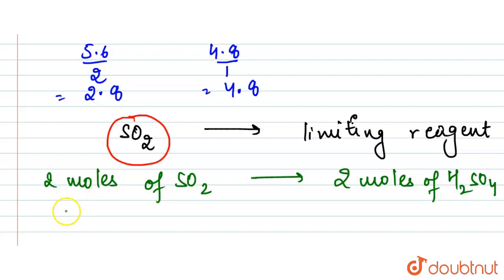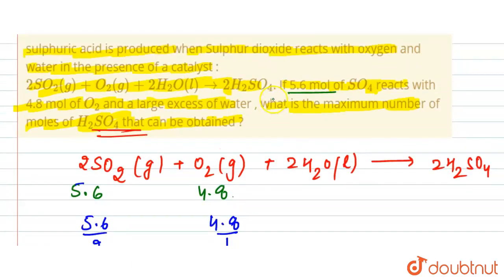Then 1 mole of SO2 will produce 2 by 2 moles of H2SO4. Now in the question it is given that we have taken 5.6 moles of SO2.